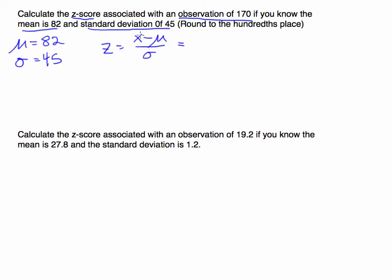The observation is 170. When we subtract the mean of 82, what we're getting is the total distance. So 170 minus 82 is 88. What I just found there, with this value of 88, I just found that 170 is 88 away from the mean. The difference between 170 and 82 is 88. That's how far away it is.